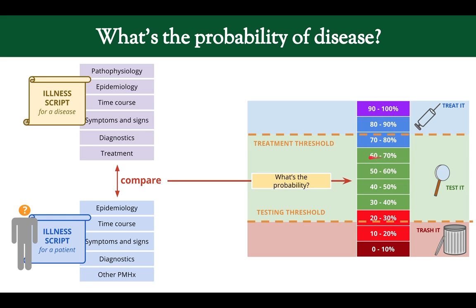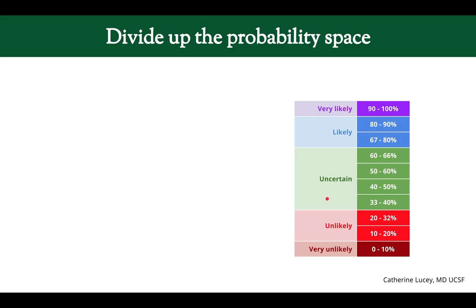If the probability is above the treatment threshold, we treat. If it falls below the testing threshold, we discard it. If it falls in the middle, we need to do some testing.